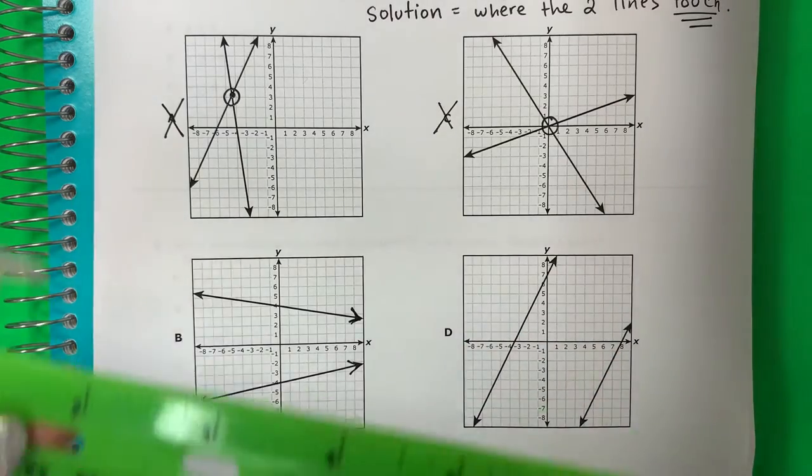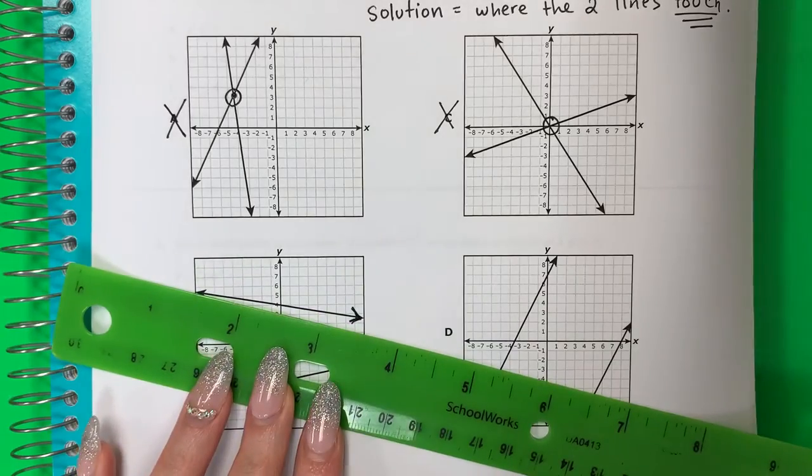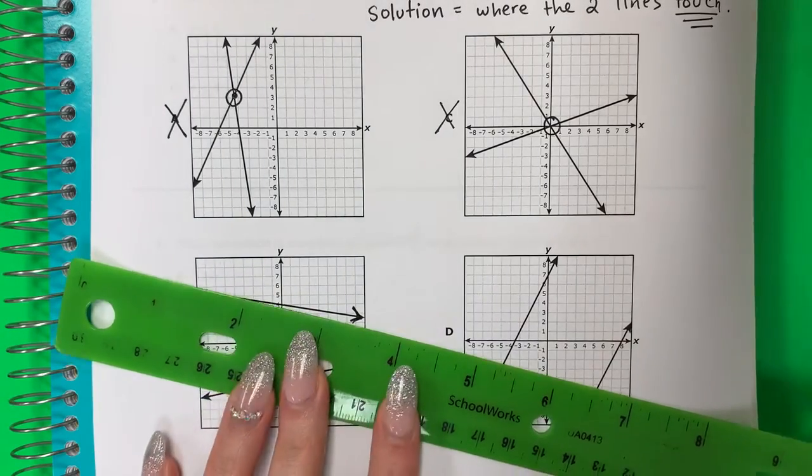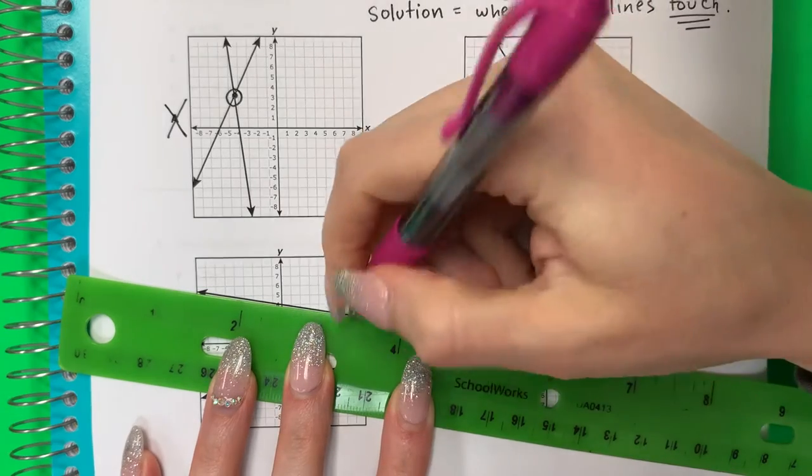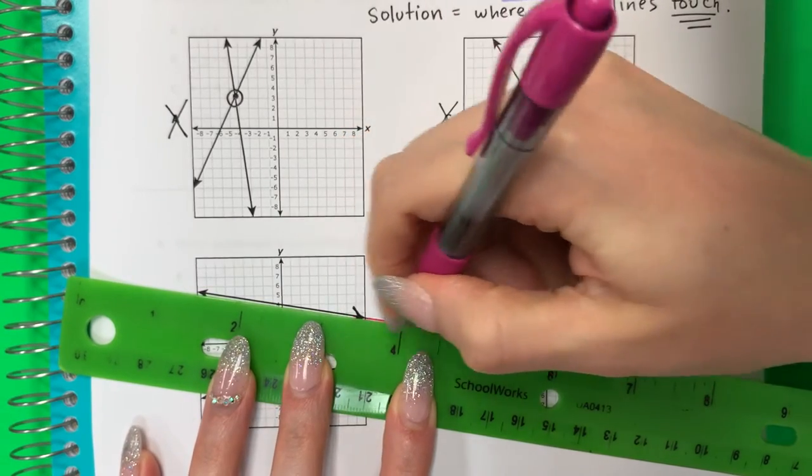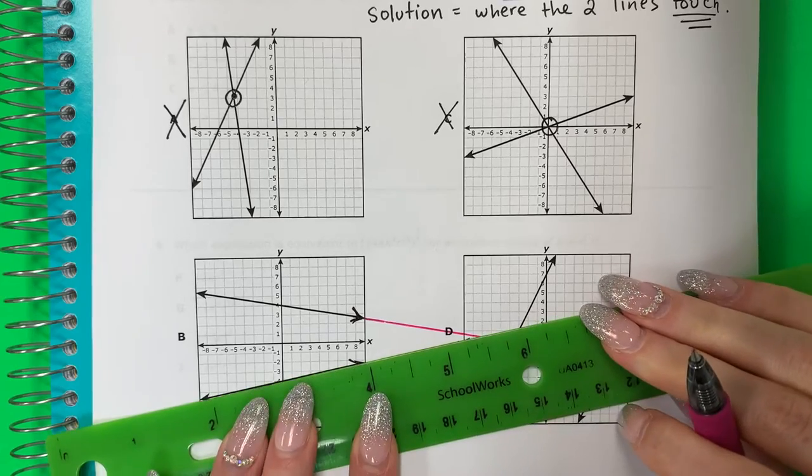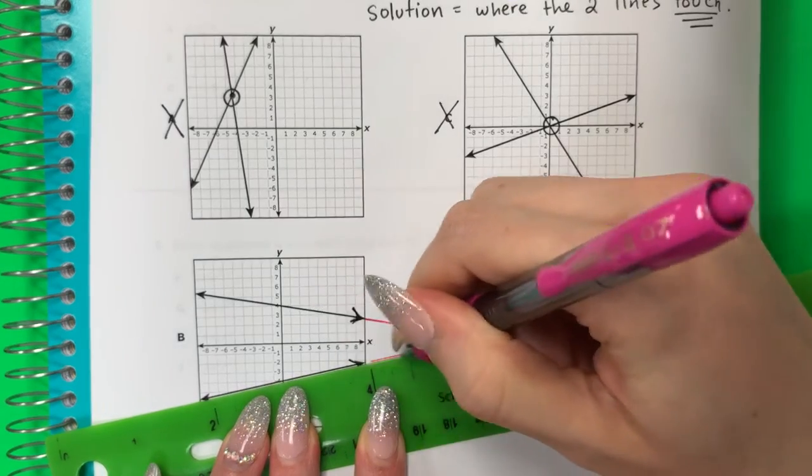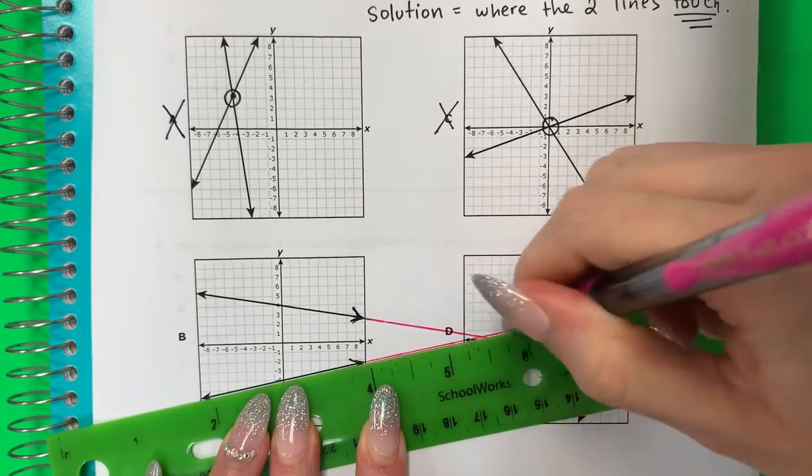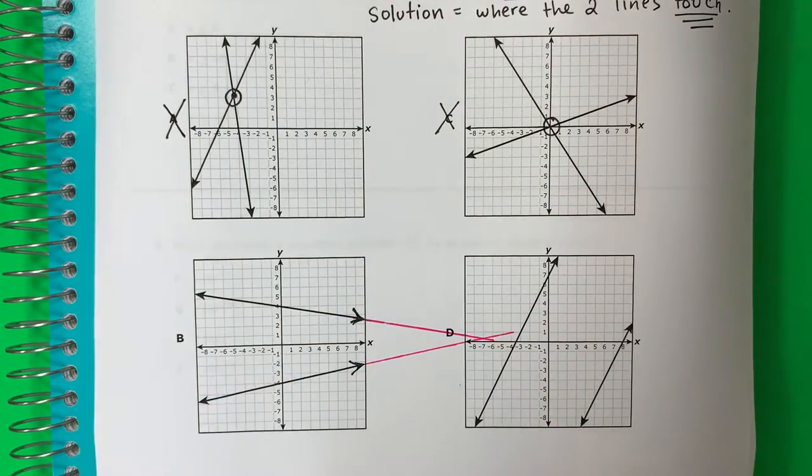So let me go ahead and take my ruler. And I'm going to go ahead and continue these lines in that direction and see what happens. Just kind of continue it. Okay, so what happens? ¿Qué pasa?